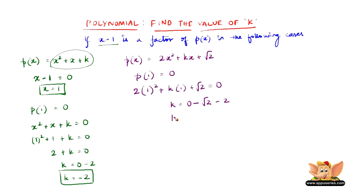So we have k equals minus of root 2 plus 2. The value of k is minus of root 2 plus 2.